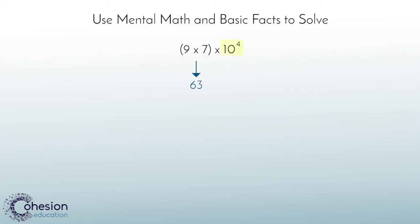Recalling what we know about exponents, we know that the fourth power of 10 is 10,000. Therefore, we need to multiply 63 times 10,000 to get our final answer of 630,000. This is using mental math once students can recall the fact and how to solve the exponent.